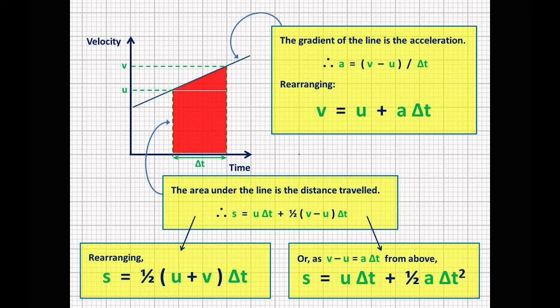Now if you wanted to find the area of that graph, what you could do is split into two sections, just as shown. There's a box and a triangle. The area of the box would just be base times height, which is delta t times u, and that's easy enough.